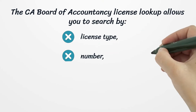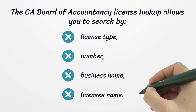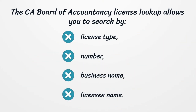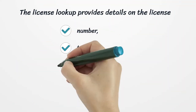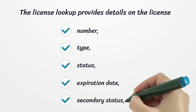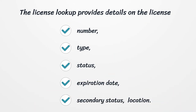The CA Board of Accountancy license lookup allows you to search by license type, number, and business name. The license lookup provides details on the license number, type, status, expiration date, secondary status, and location.